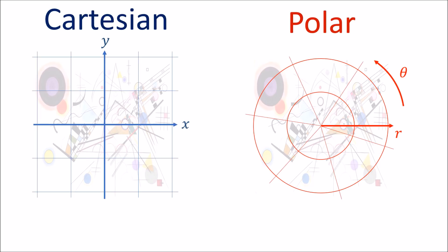With the Cartesian system we use the coordinates x and y to measure the horizontal and vertical positions of a point relative to a special origin point. With polar coordinates we use the coordinates lowercase r and theta, which represents a point's radius from the origin and the angle of counterclockwise rotation of the point from a horizontal axis.